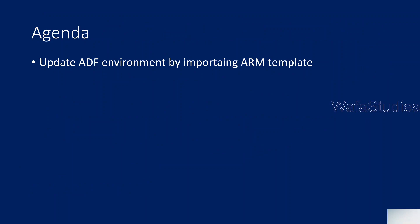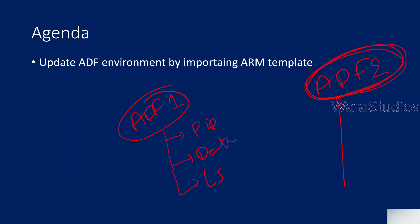Let me explain what I mean. Let's assume you have a data factory called ADF1 and in this data factory you have some pipelines, some datasets, and some linked services. Now you created another data factory called ADF2 - a plain data factory - and you want to get the entire environment from Data Factory 1. That means the pipelines, datasets, and linked services from Data Factory 1, you want to import them into Data Factory 2 as well. You generally do that when you want to take one environment to another environment. In such scenarios, how to do that using the ARM template import option.